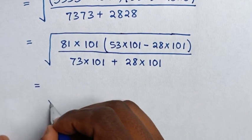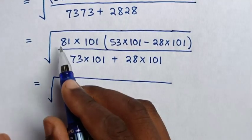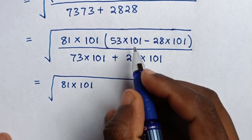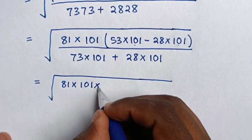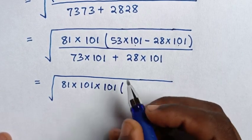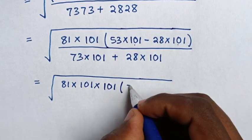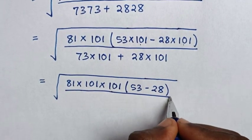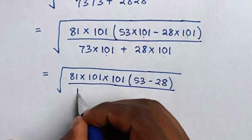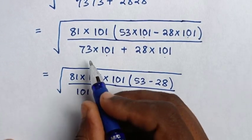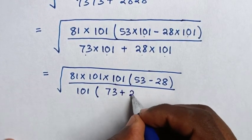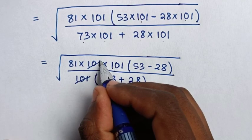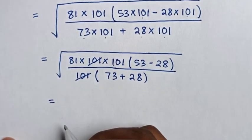It will be equal to square root of 81 times 101, then 101 is common so take 101 out of the bracket, giving times 101, then bracket (53 minus 28), over — in the denominator 101 is common, so take 101 out, giving 73 plus 28. In the next step we simplify: this 101 will cancel that 101.